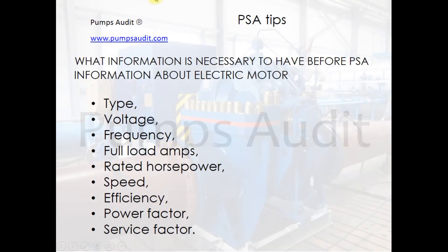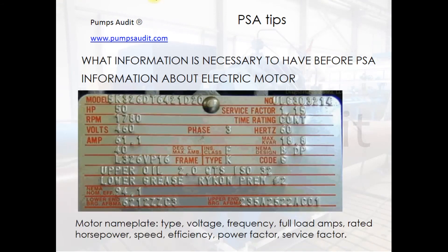This is information about the electric motor: type, voltage, frequency, full load amps, rated horsepower, speed, efficiency, power factor, and service factor. Information about electric motor characteristics can be received from different sources: the nameplate, the catalog, or from the manufacturer.